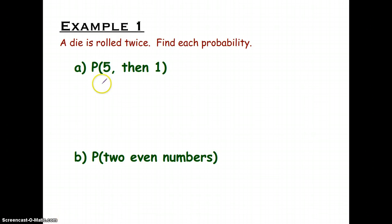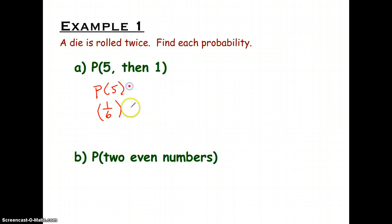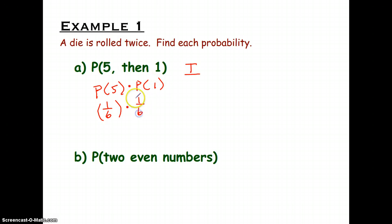For example, a die is rolled twice and we want the probability of rolling a 5 and then a 1. The probability of rolling a 5 is 1/6. We multiply that by the probability of rolling a 1, which is also 1/6 — these two events are independent of each other. So we get a probability of 1/36, or in decimal form, 0.0277 repeating.